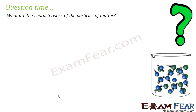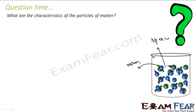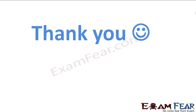What are the characteristics of particles of matter? First, there is space between them. Second, they are in constant motion. Third, there is attraction between these particles. Matter is made of particles, and these particles have these three key properties: space between them, constant motion, and mutual attraction.